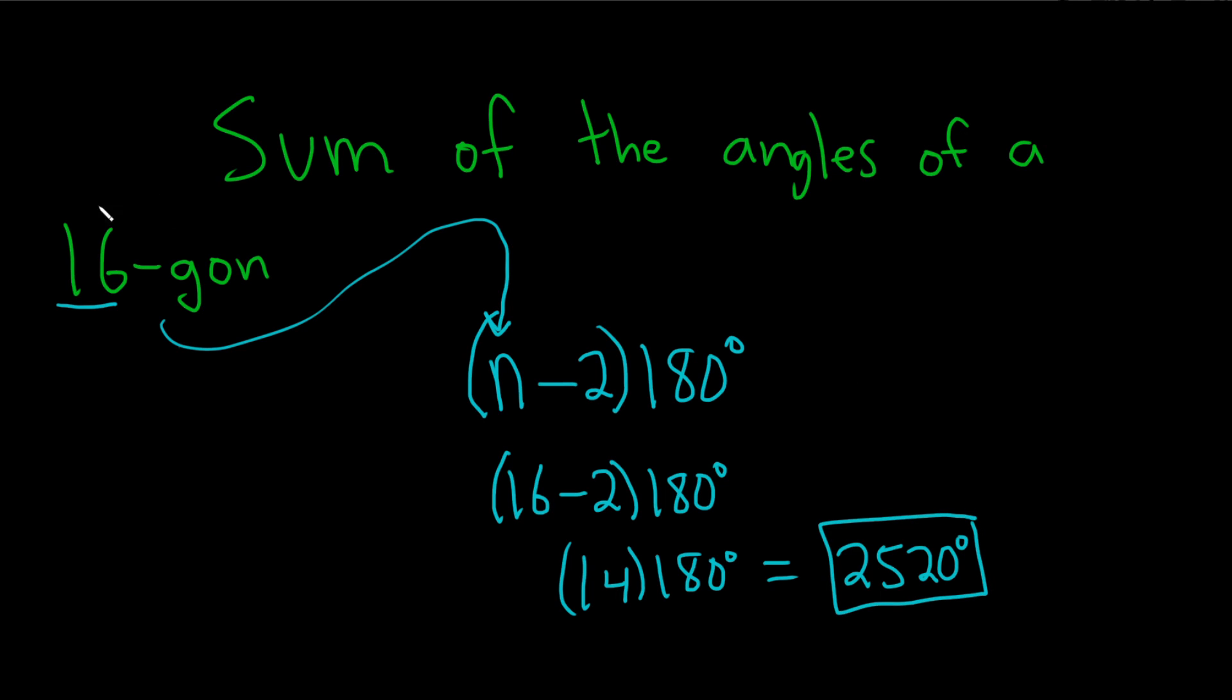That is the sum of the angles of a 16-gon. This is the formula you definitely want to memorize. It gives you the sum of the angles of an n-gon. Because this is a 16-gon, you just plug in the 16 and work it out. Good luck.